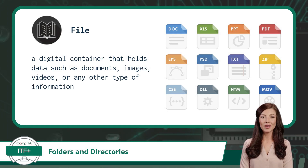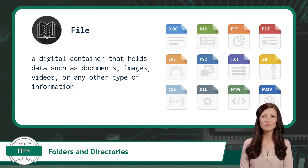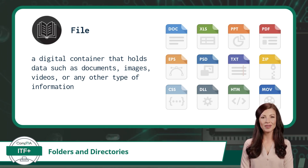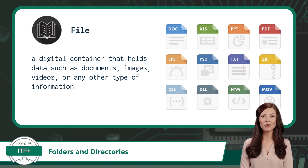A file, in the context of information technology, is a digital container that holds data such as documents, images, videos, or any other type of information. It could be your essay for school, a picture from your last vacation, or even a program that runs your favorite game. Imagine files as individual pieces of a jigsaw puzzle — when they are organized and put together correctly, they create a complete picture, enabling your computer to perform its various tasks.